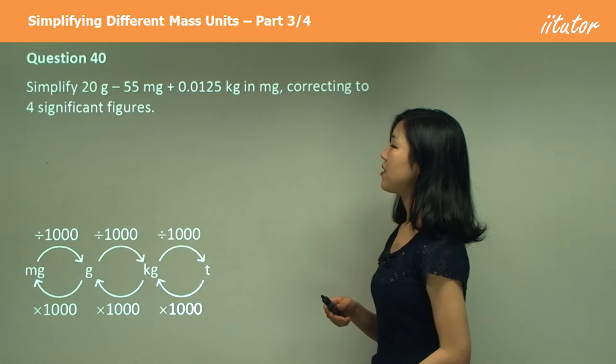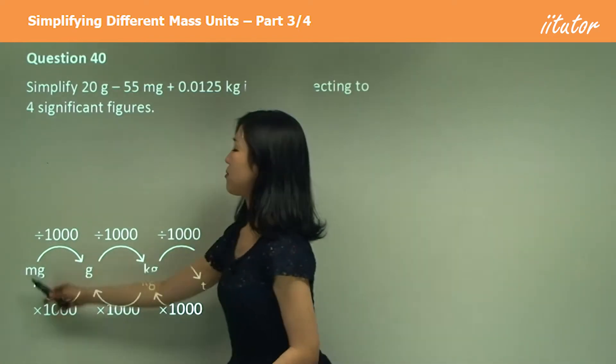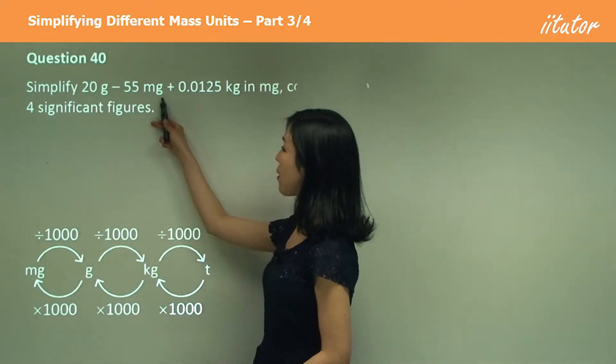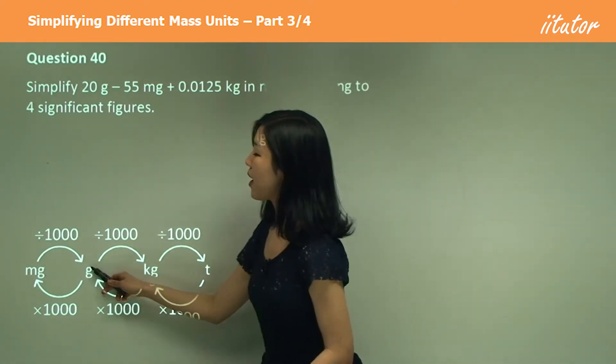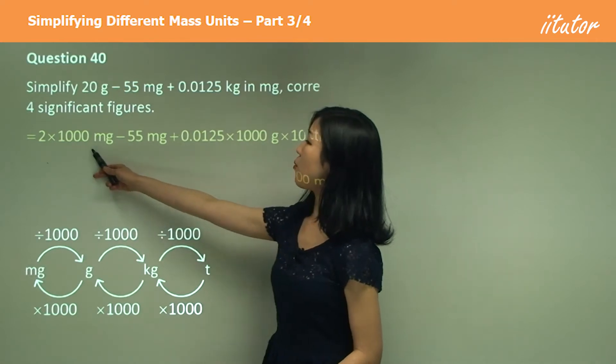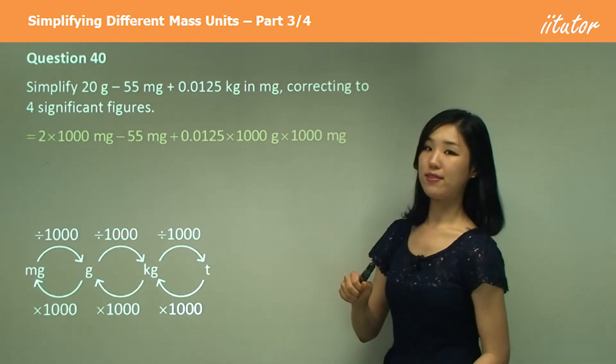Okay, to milligrams. So grams to milligrams, multiply. Milligrams, leave it alone. Kilograms to milligrams, multiply twice. So multiply once and multiply twice here.